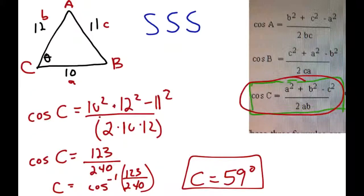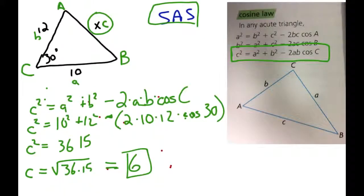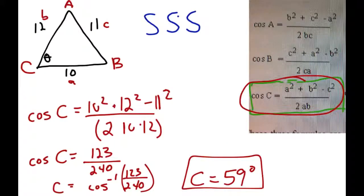So those are the two different types of examples for the cosine law. With the sine law, remember you have to have an angle and a side across from it — both given to you. The cosine law takes care of the two cases where the sine law doesn't work: side-angle-side, and side-side-side. In both cases, always relabel the side or angle you're working with as C, use the corresponding cosine C formula, and you're good to go.